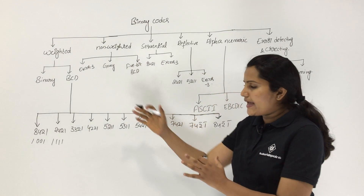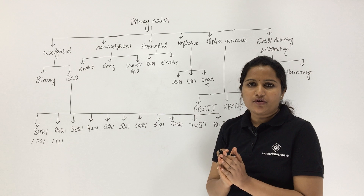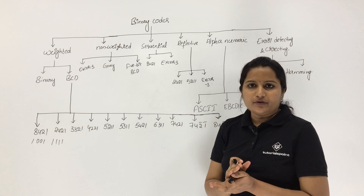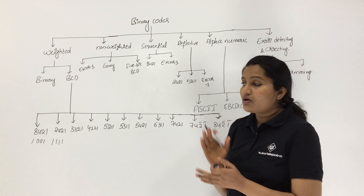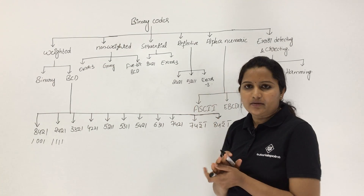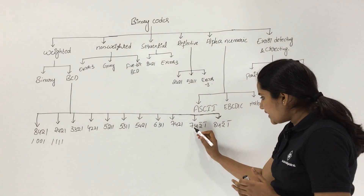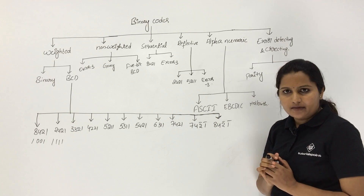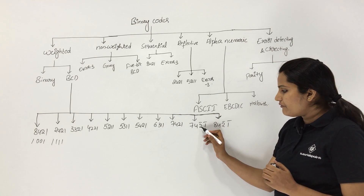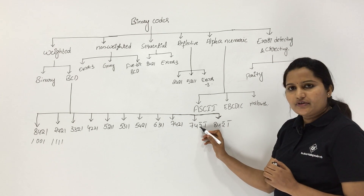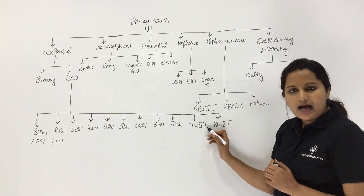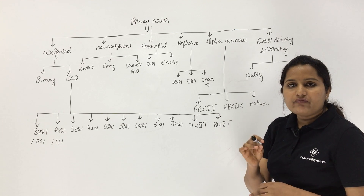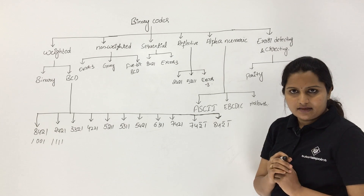This tree diagram is very, very important from a theory point of view. You may get one or more questions on this diagram. For 742̄1̄ code, whatever weights have bars, you subtract those when a 1 is placed under them.